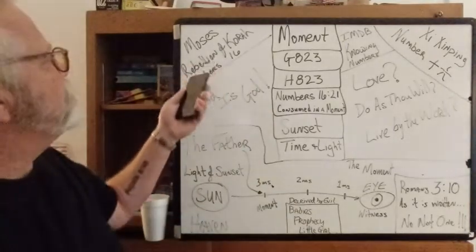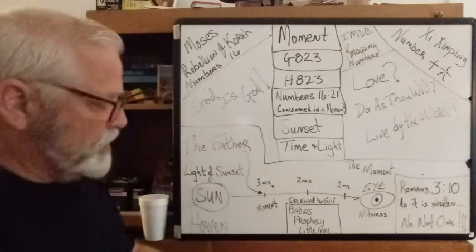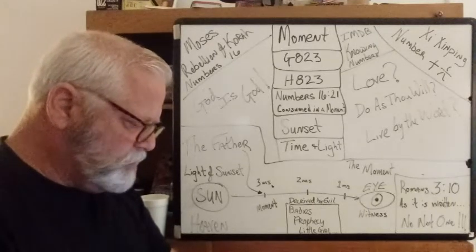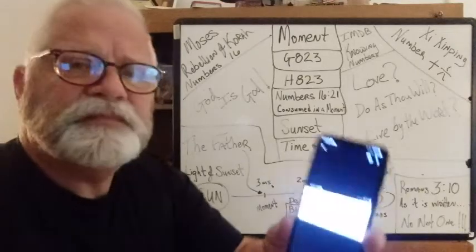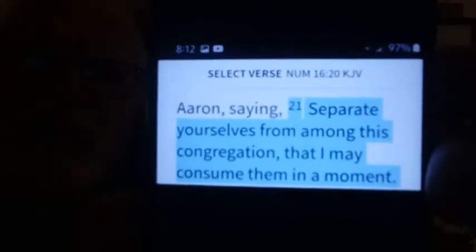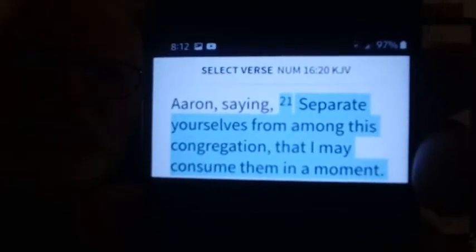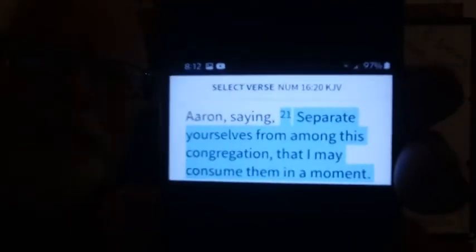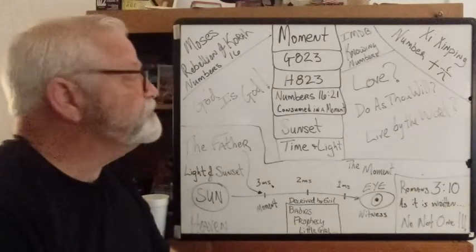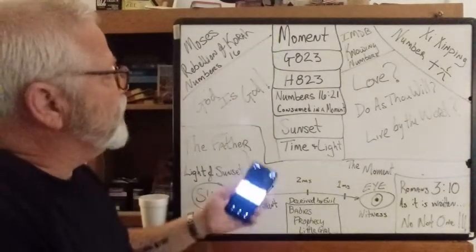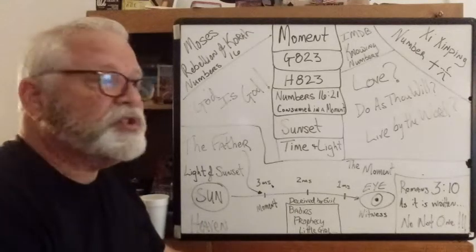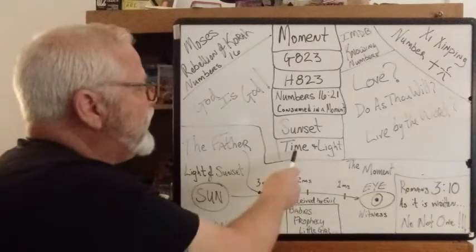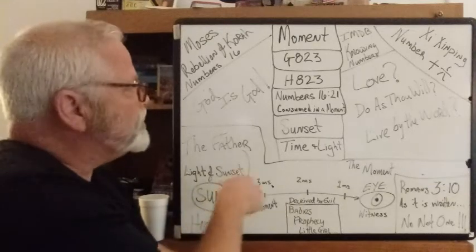In a moment, Moses at the Rebellion of Korah, Numbers 16. Separate yourselves from among this congregation that I may consume them in a moment. That's what he's going to do. We're going to be separated from this congregation that chases after evil, this place that is the world. We're going to be taken out via the rapture in a moment, in a flash of light, the light of sunset.